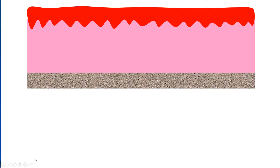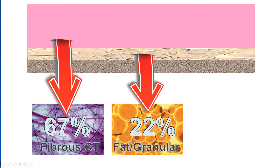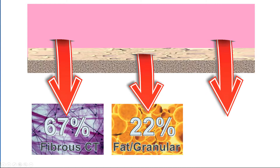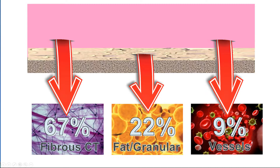Once we remove the epithelium and continue the study in the microanatomy, the connective tissue itself has in its composition about 67% fibrous connective tissue, about 22% fat or granular tissue. It is a reminder that these fatty and granular tissues are usually more located in the deepest part of the connective tissue, and 9% of blood vessels. It is important to note that the main composition of the connective tissue is water.